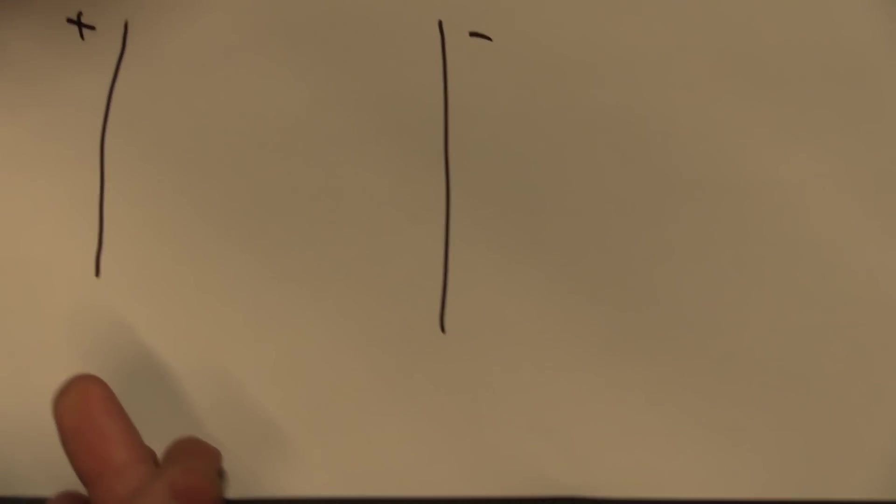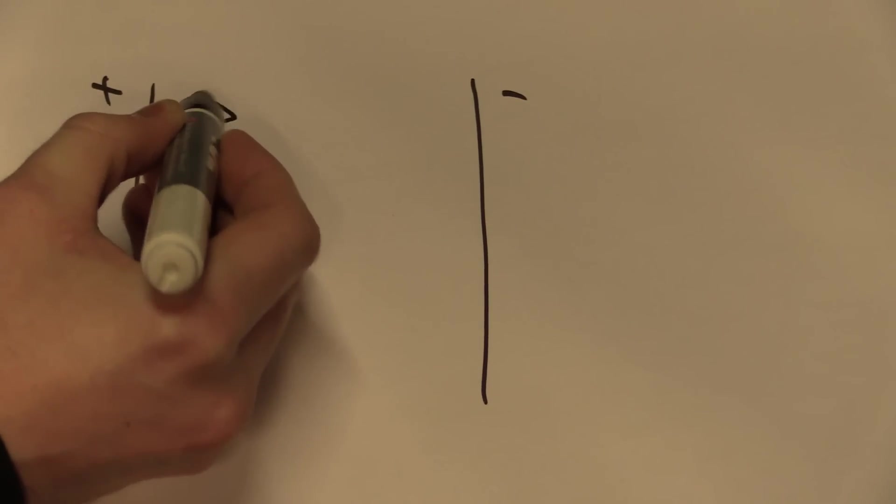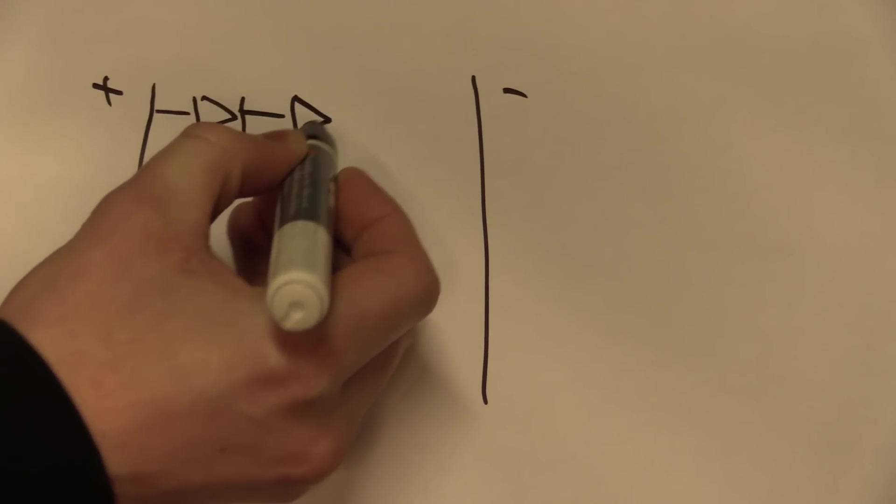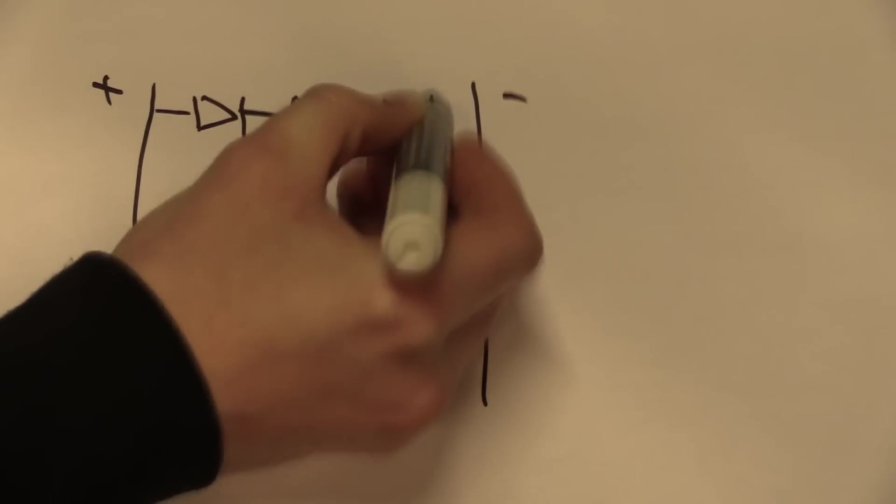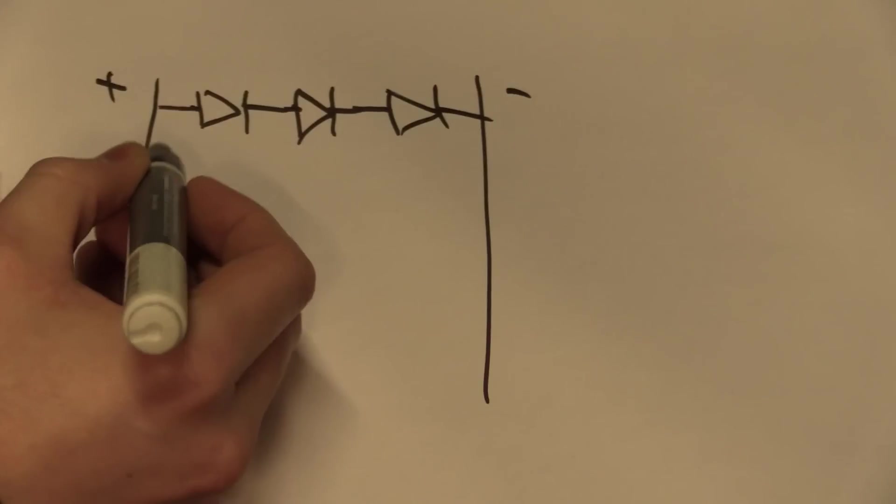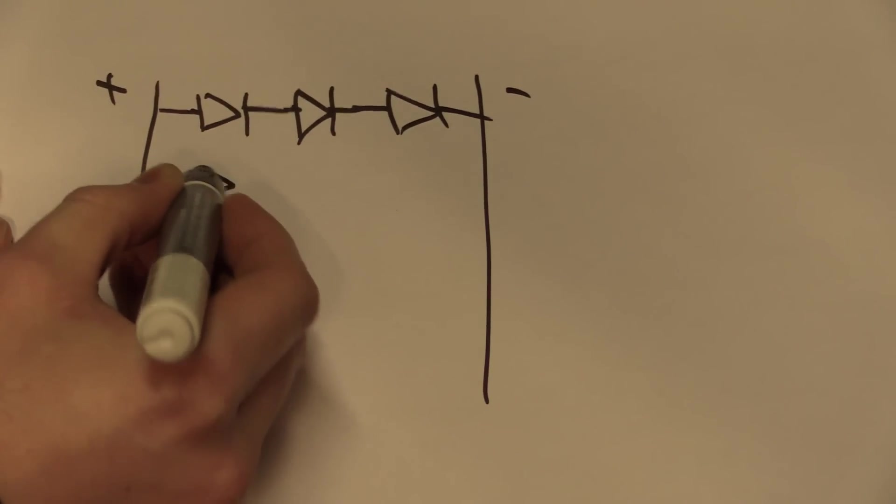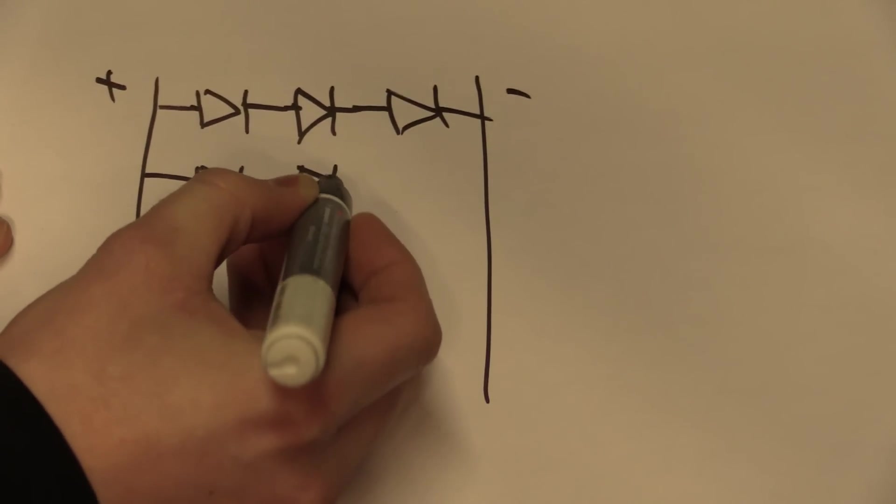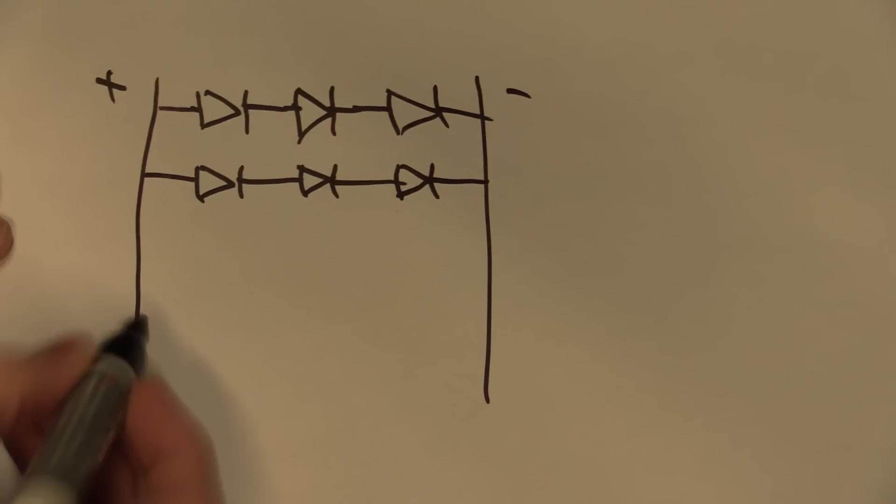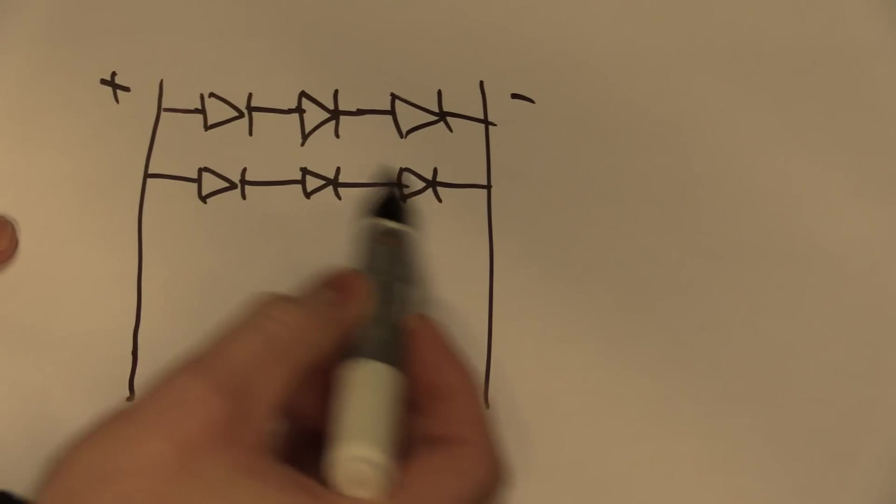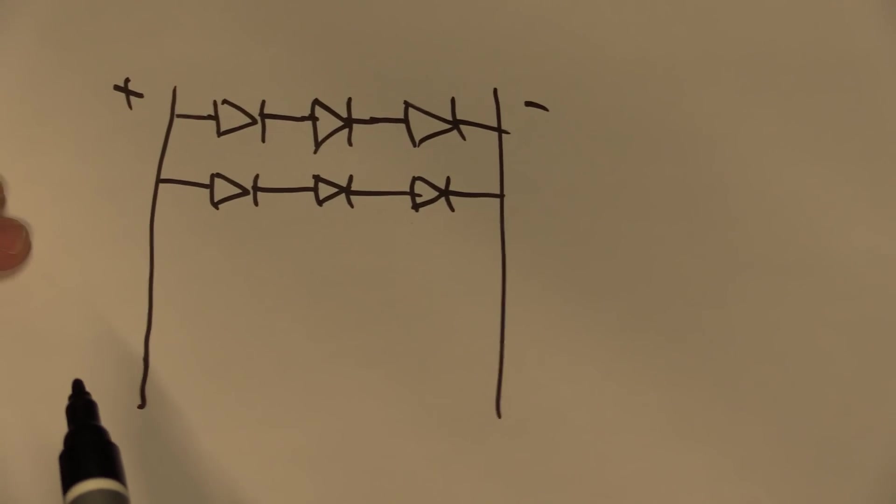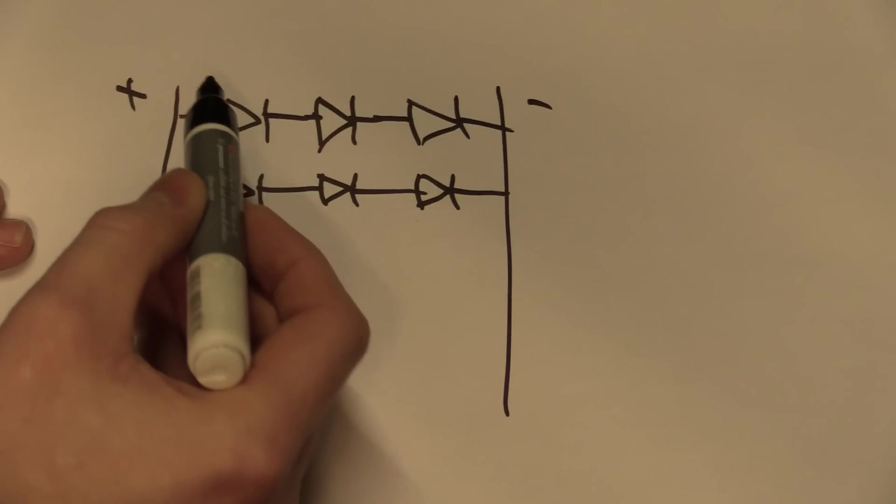And just to summarize that, if we have the positive rail on this side and the negative on that side, then the LEDs are in a grid like this. And I think there was 10 LEDs in series in the other one, but it doesn't matter, I'll just draw a few. And there would be 10 strings in parallel also.